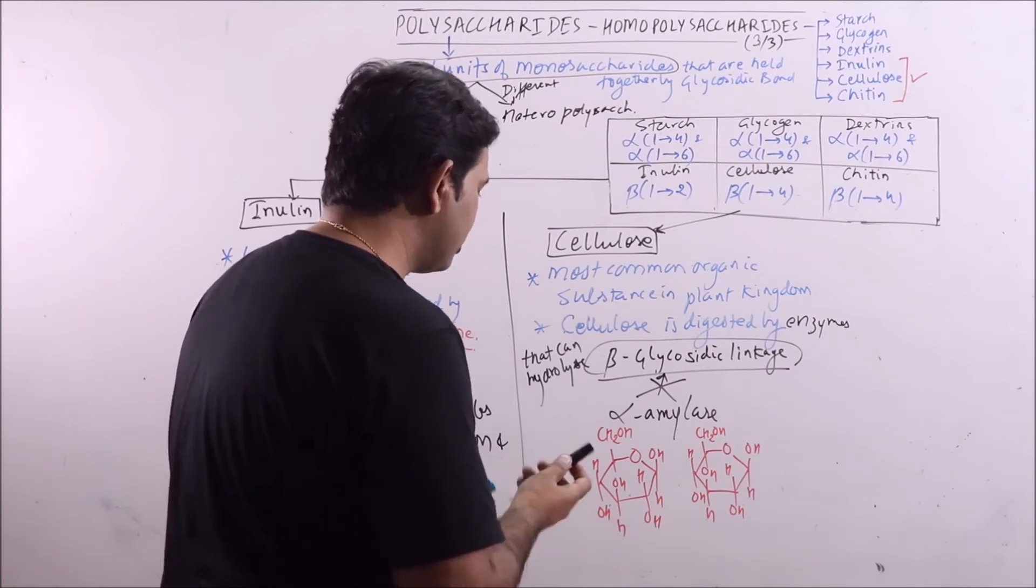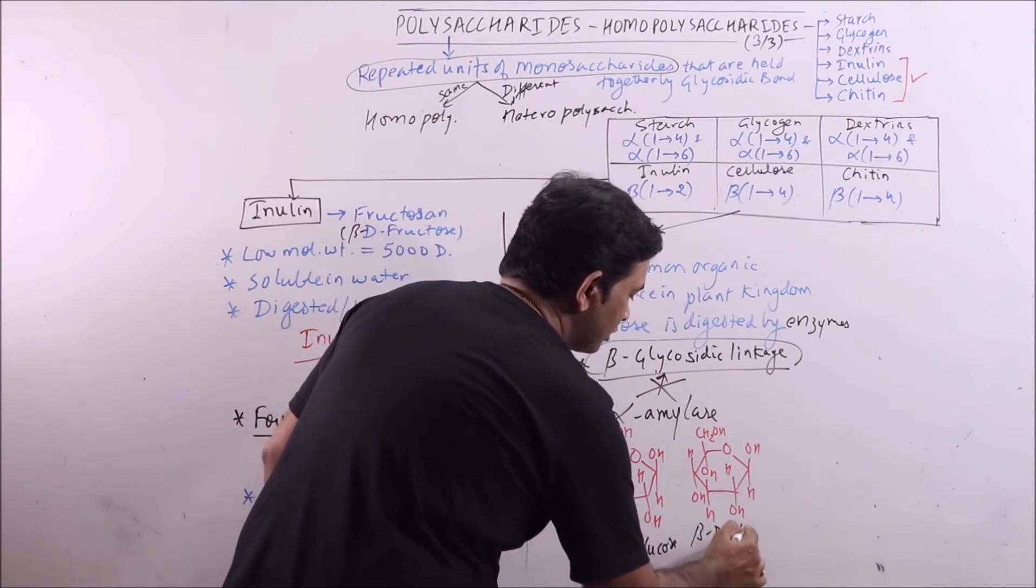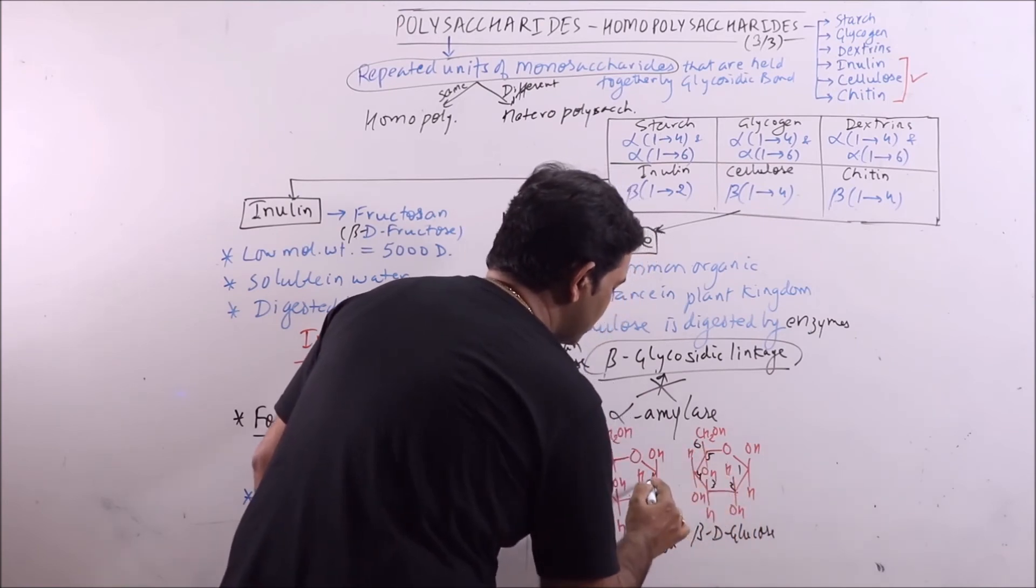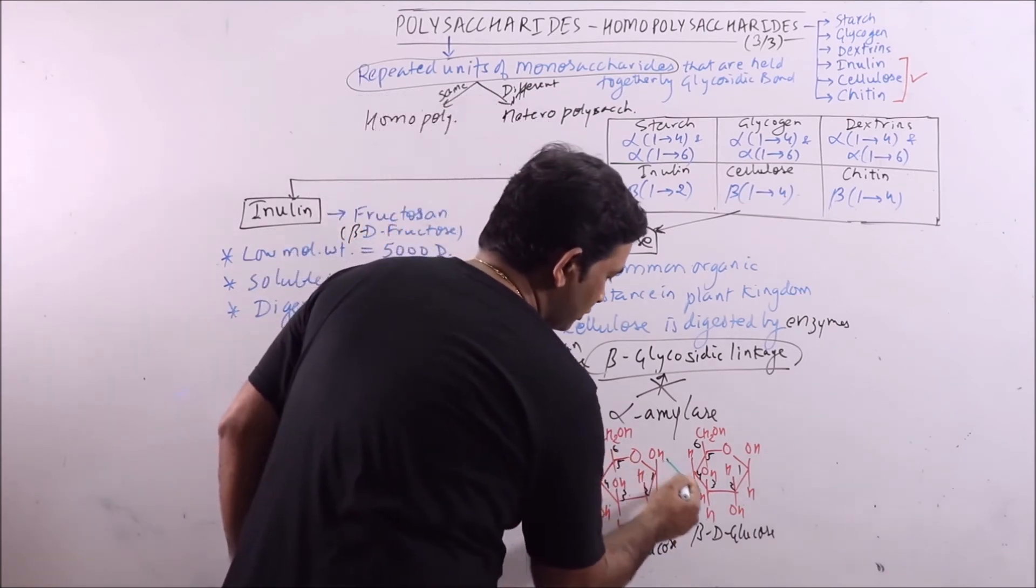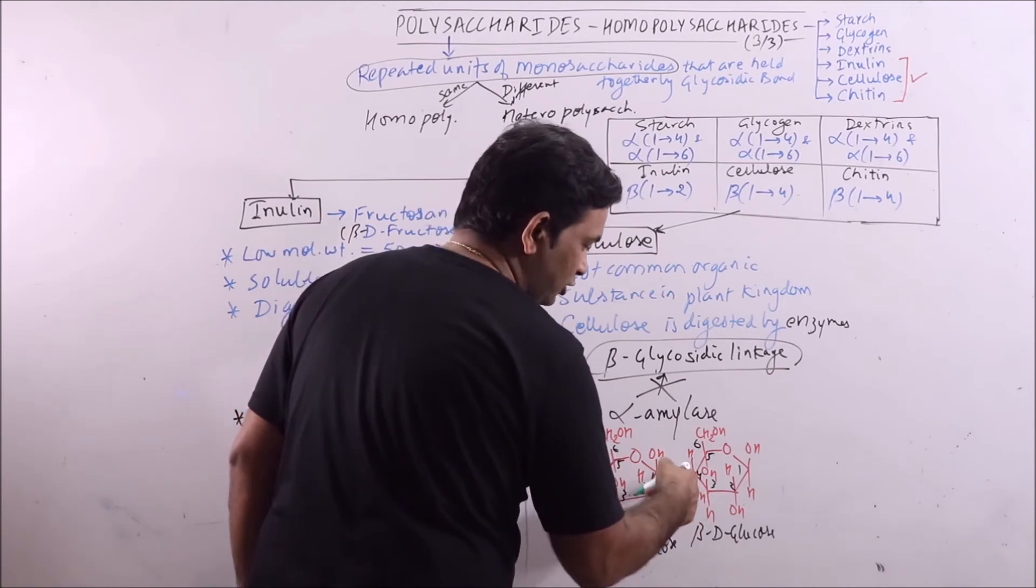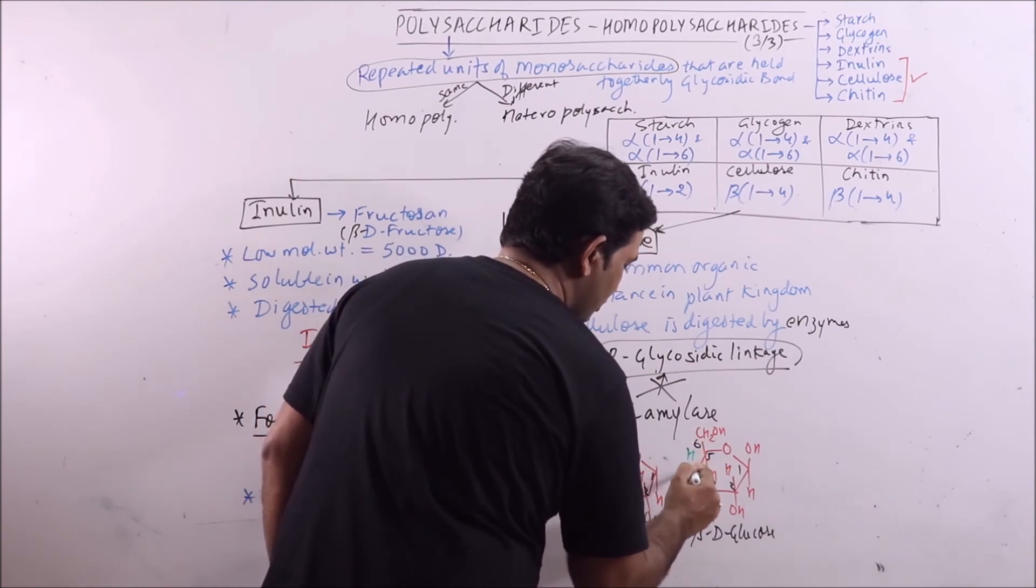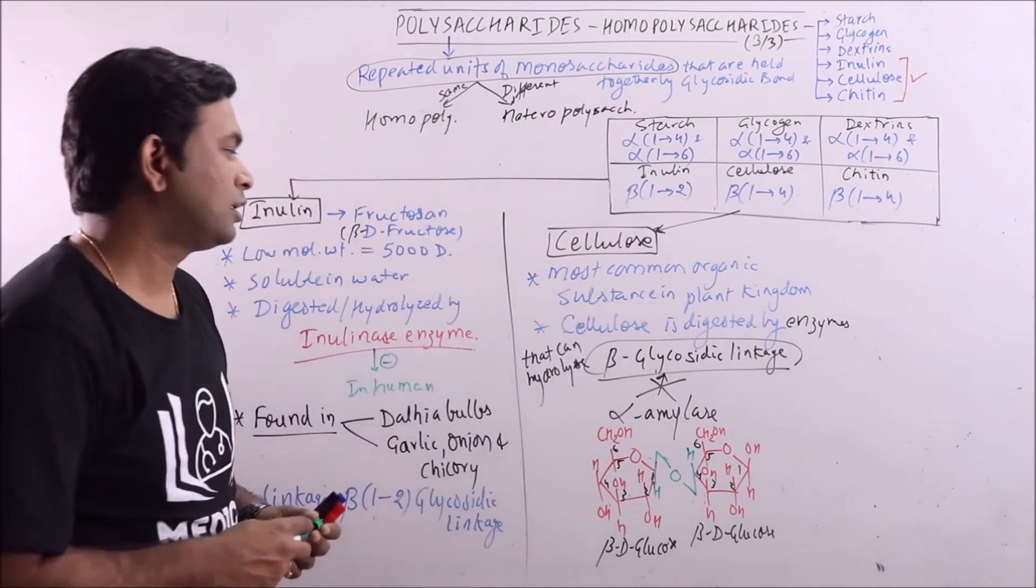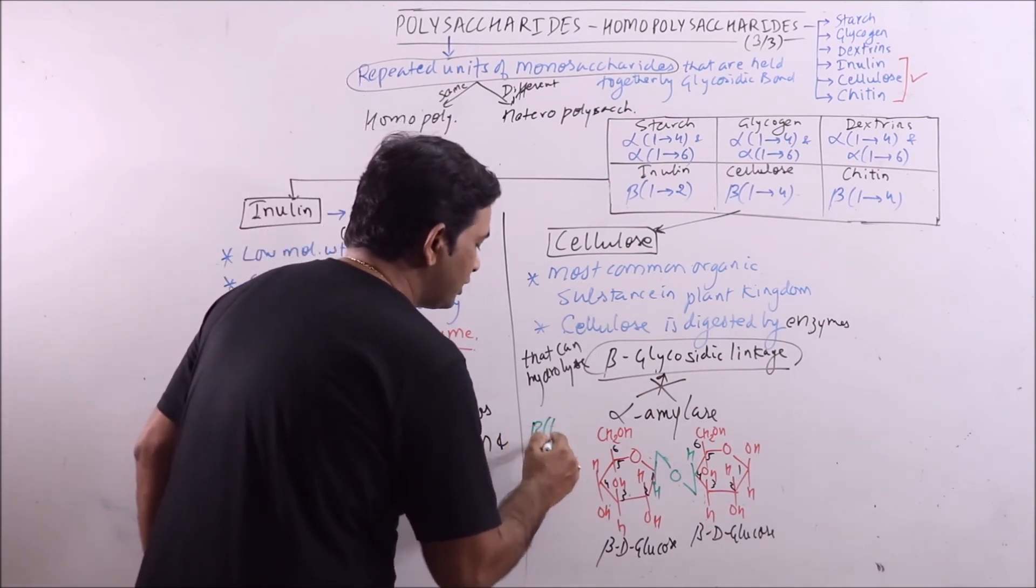These are the structure of beta-D-glucose, this is also beta-D-glucose, and numbering is 1, 2, 3, 4, 5, 6. The bond will be formed in between these two carbons and in between these two hydroxyl groups. This is the beta glycosidic linkage and the type of linkage will be beta-1,4.